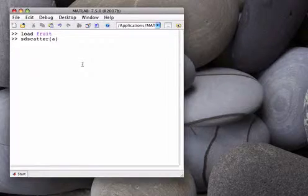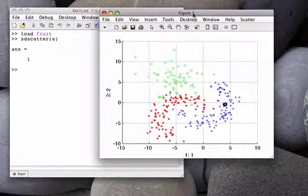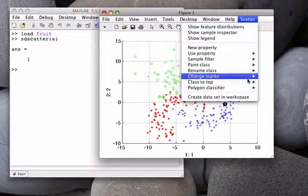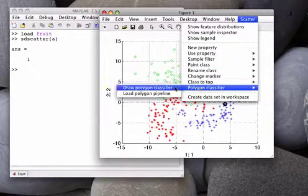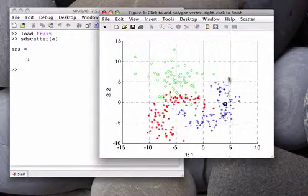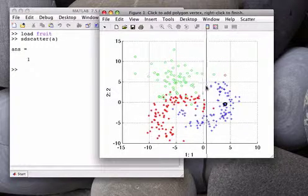Let's see how it works on the fruit dataset. You can select in the scatter menu the option Draw Polygon Classifier. By clicking with the left mouse button, you can draw the vertices of the polygon.